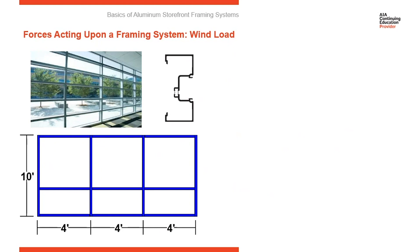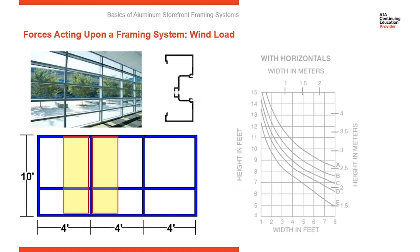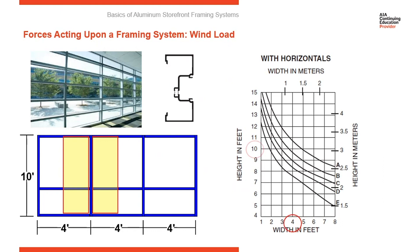So in an elevation like this, we're 10 foot tall, verticals four foot on center. We need to look for a wind load chart that says with horizontals. This is our tributary area. We're two feet on each side of it. So now the chart we're looking at here says with horizontals. So all frames are going to have two separate wind load charts, one with horizontals, one without horizontals.